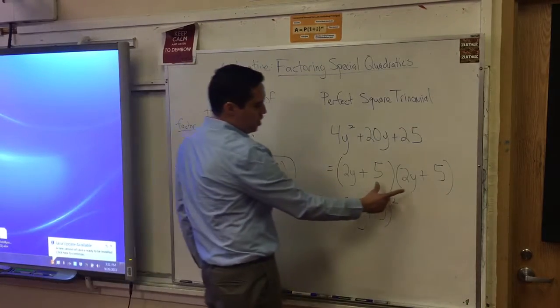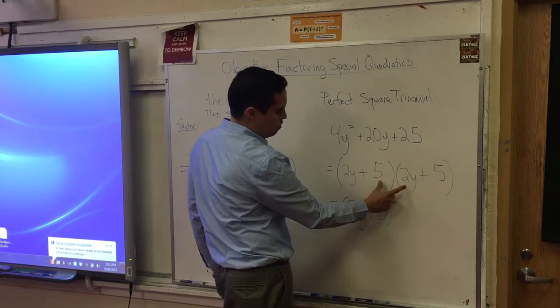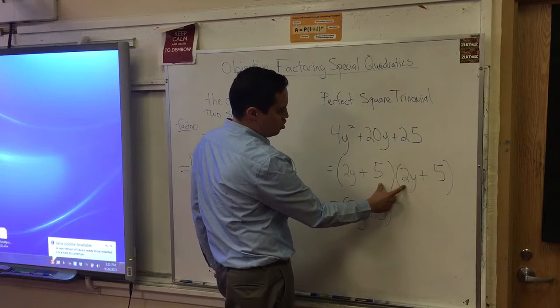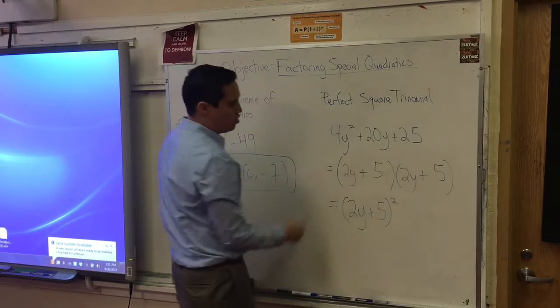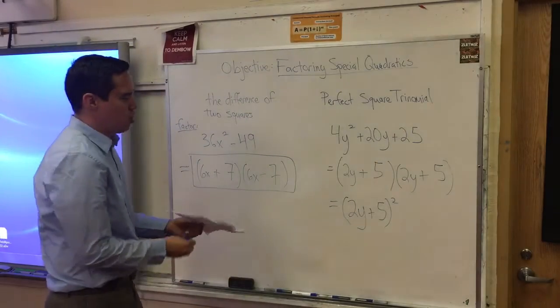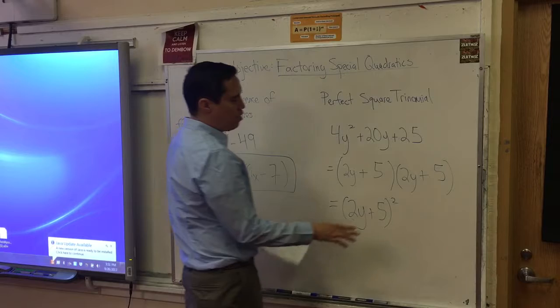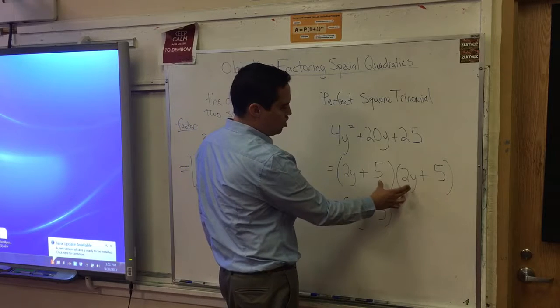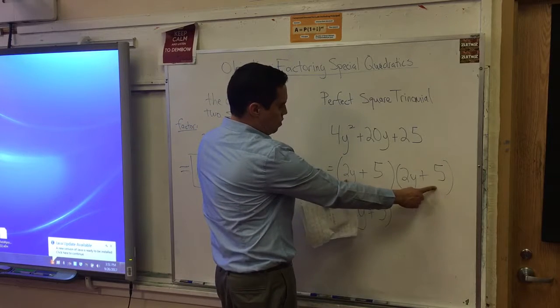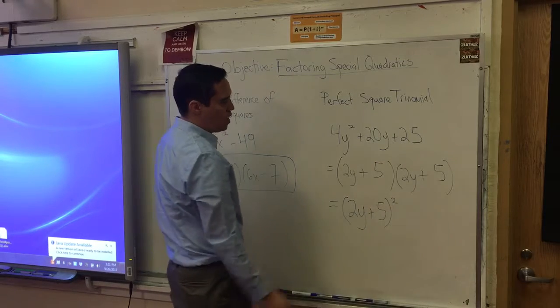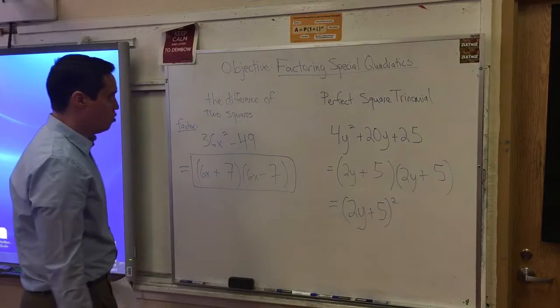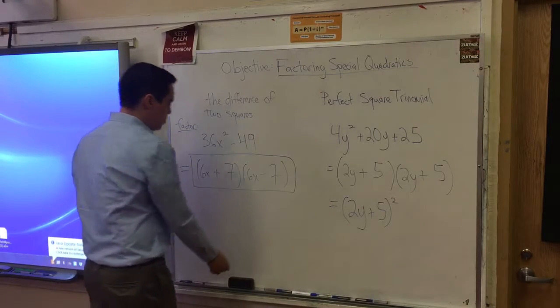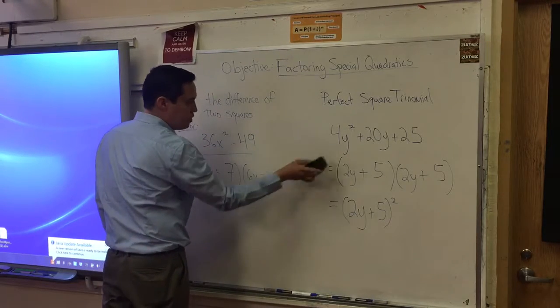4y squared plus 20y. Look at this. When you do the inner step of FOIL, 5 times 2y, that's 10y. You double that and you get the 20y. So that's how you know it's a perfect square trinomial. If you do inner or outer multiplication and double it, 2y times positive 5 is 10y. Double that and you get 20y. That's how you know it's a perfect square trinomial.